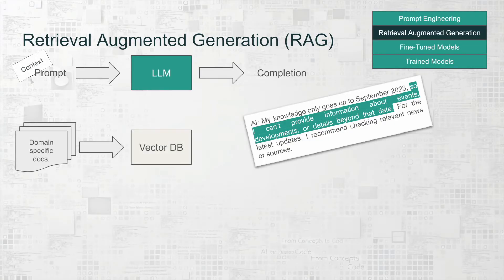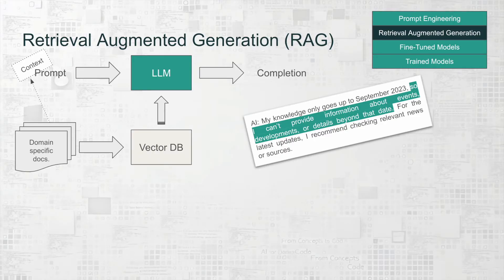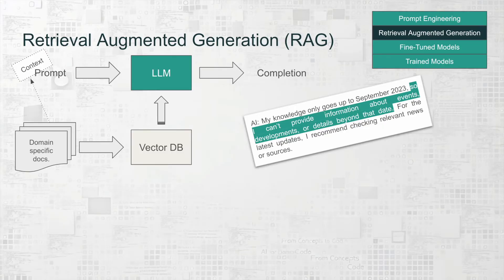With RAG, the application pulls data from external sources, stores it in a vector database, and links that data in the prompt. This allows the LLM to retrieve and use the most relevant information when generating a response. Think of vector databases as handy tools that organize a special kind of data called vector embeddings — kind of like data fingerprints. These bits of information are stored and can be pulled by the LLM later to help generate better responses.